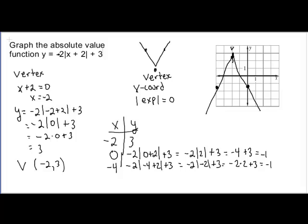Finally, this negative, multiplying the absolute value by a negative, caused the v to be flipped upside down. So I hope this tutorial helps you and good luck with your problems.